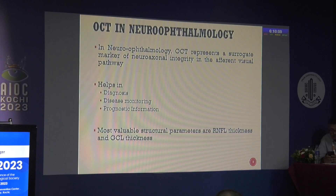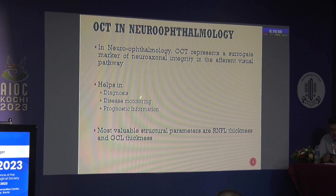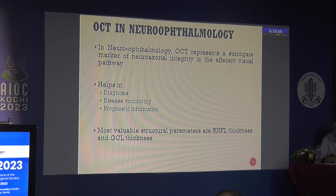Coming to the role of OCT: it is a surrogate marker of neuro-axonal integrity in the afferent visual pathway. It helps us in diagnosing various conditions, disease monitoring, and prognostication — another useful application where we can prognosticate the patient as per the OCT findings.